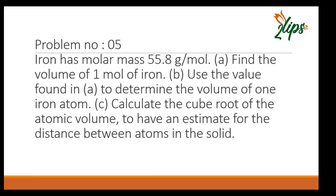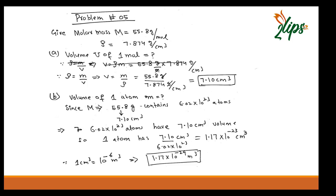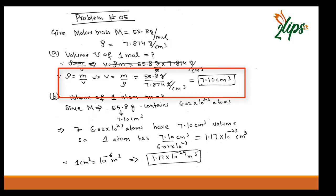Problem number five: the molar mass of iron is given. In part (a) we find the volume of one mole of iron; in part (b) the volume of one single iron atom; and in part (c) the cube root of atomic volume to estimate inter-atomic separation. The density is 7.874 g/cm³. Using volume = mass/density = 55.8 g ÷ 7.874 g/cm³, the volume of one mole is 7.10 cm³.